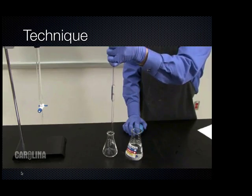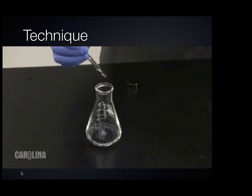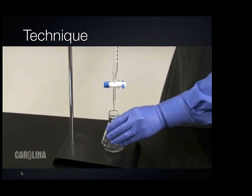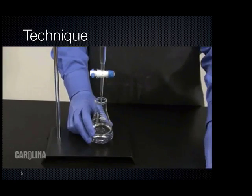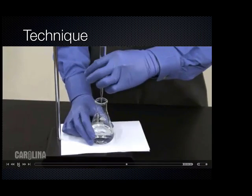Add a few drops of indicator to the flask and swirl. Place the flask under the tip of the burette. Record this volume. Placing a piece of white paper under the Erlenmeyer flask may make it easier to detect the color change.